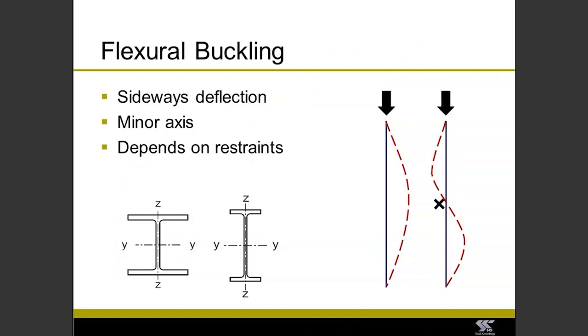Flexural buckling is the standard buckling that most people will be familiar with. You apply an axial load and it buckles sideways, generally in the minor axis, because that's the axis with the least buckling resistance. But you may have some additional restraints in particular axes, so it's not necessarily always the minor axis that's the critical case. It will depend on its buckling length within that direction.